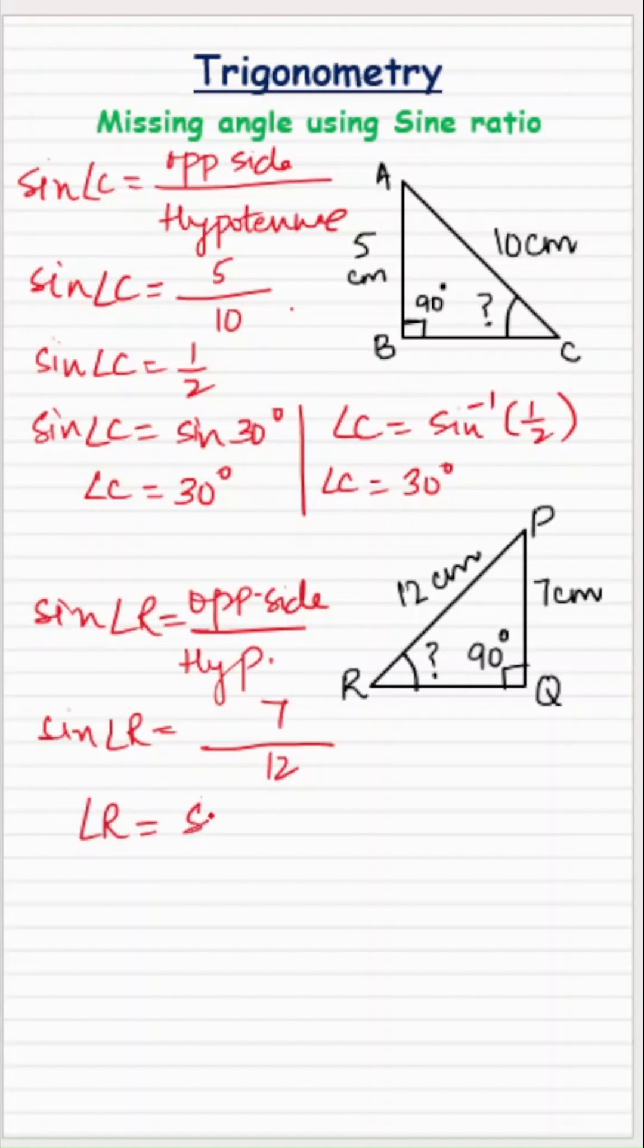So angle R will be equal to sine inverse of 7 over 12, and for this you need to use the scientific calculator. When you plug in the values for sine inverse of 7 over 12, angle R would come out to be 35.7 degrees approximately.